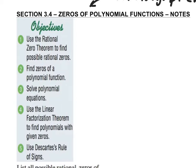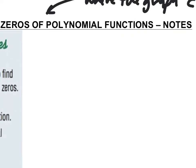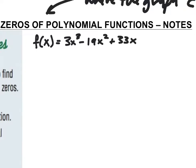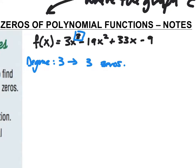Let's look at an example. I'm going to write this down: f(x) = 3x³ - 19x² + 33x - 9. The first thing I want to talk about is the degree, which is three — that's the highest exponent. So my degree is three, and that's going to give me three zeros, meaning the graph crosses the x-axis three times.